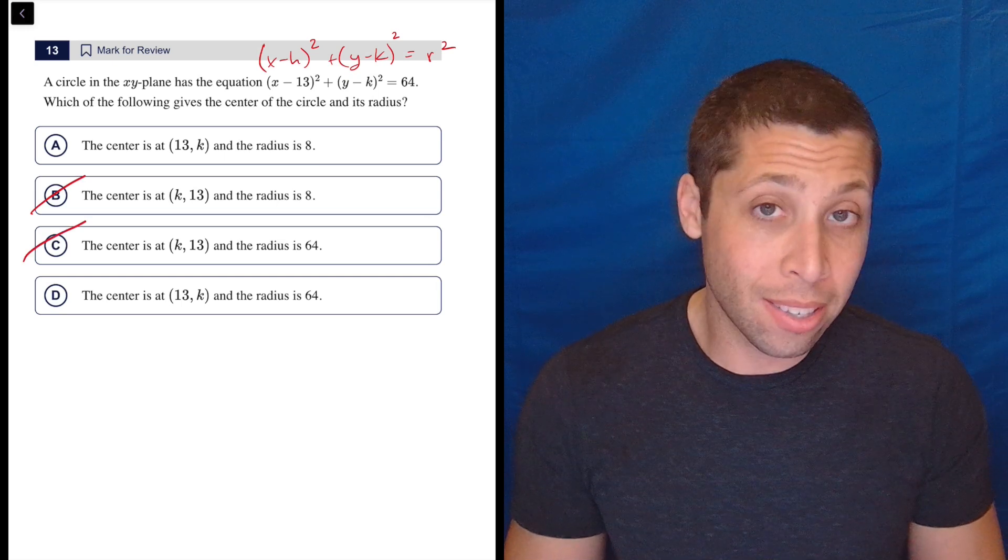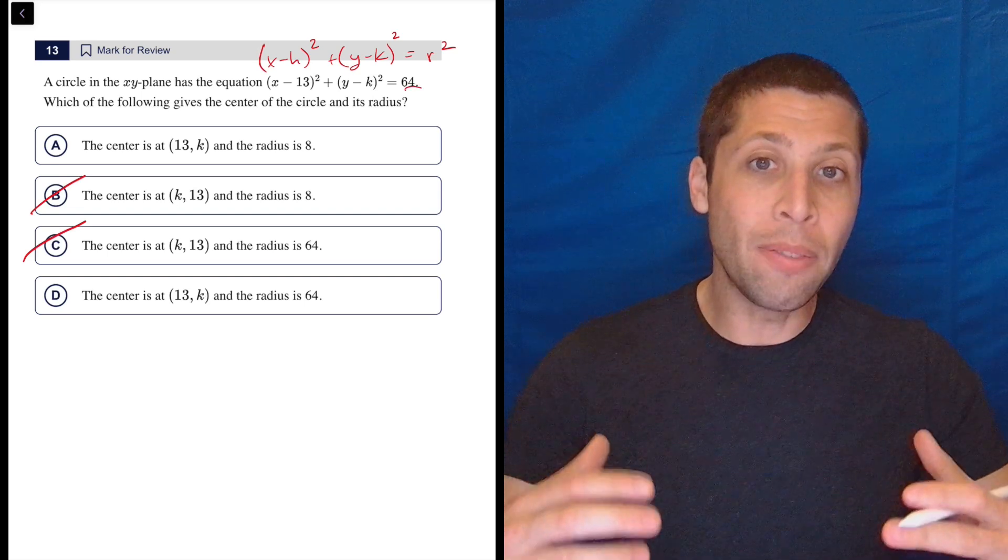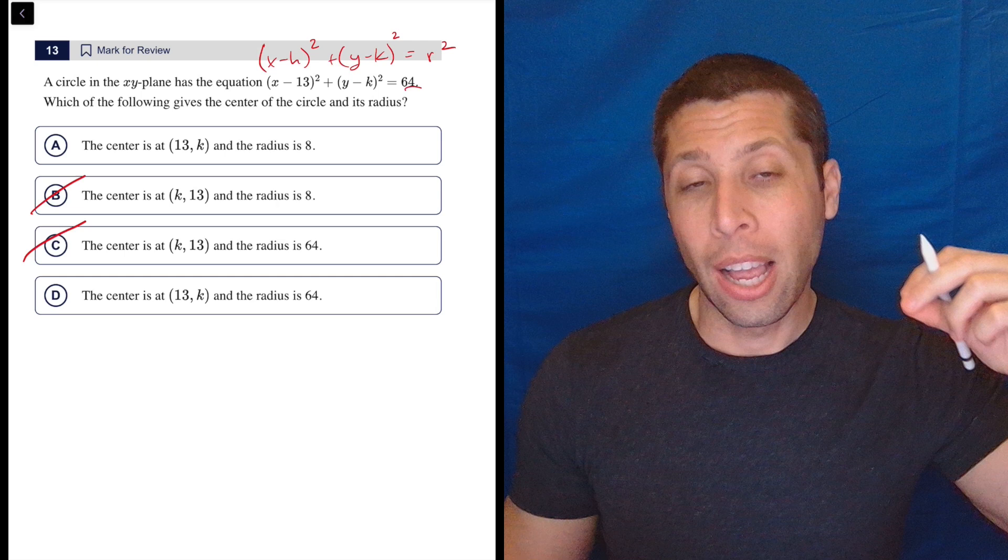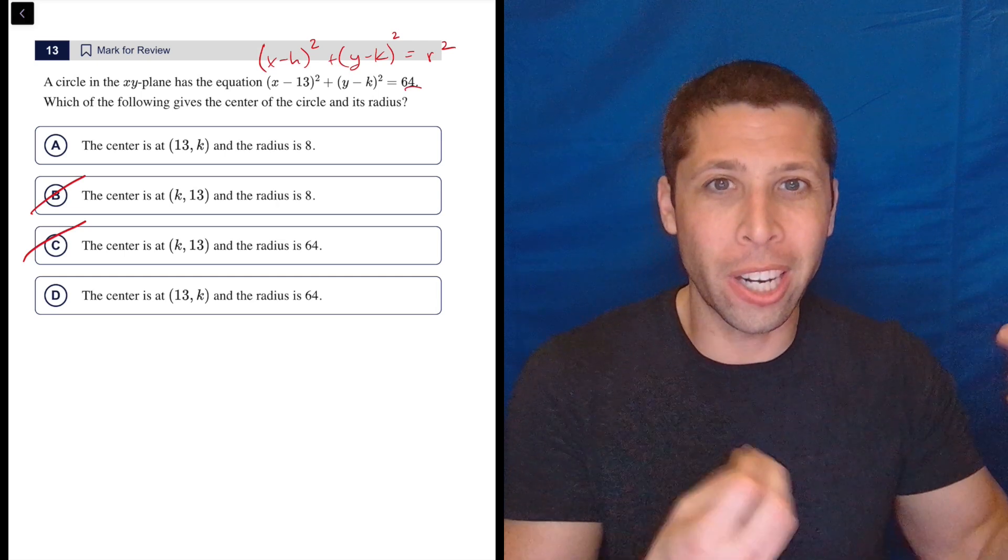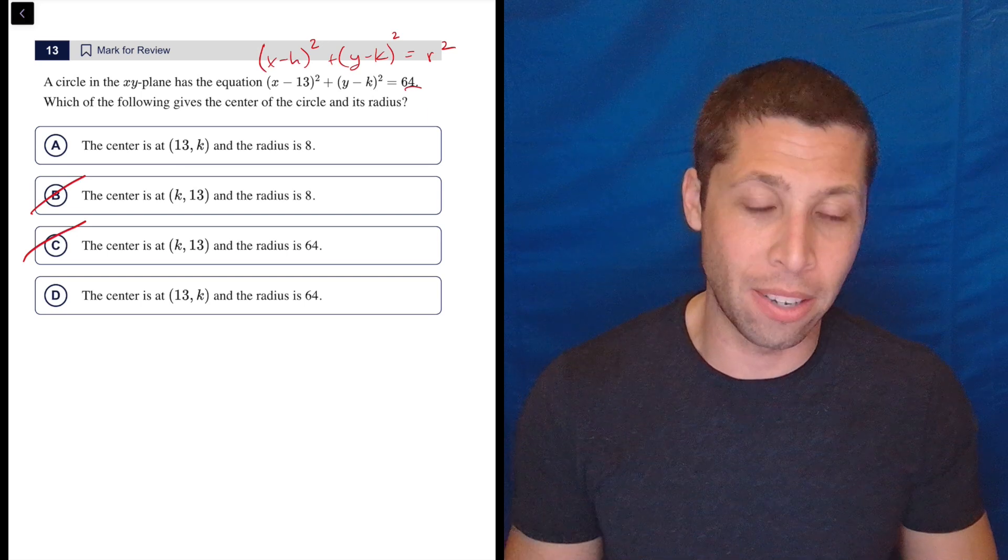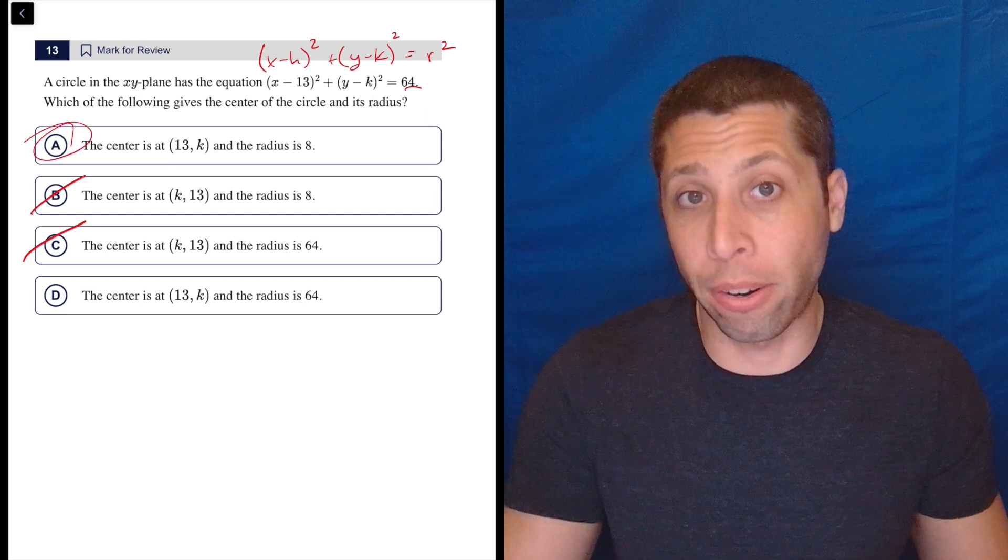And then the radius, this is the part most people are going to mess up if they're going to mess something up, is not 64 because even though the formula as we understand it has a squared on that radius, we don't see that squared because we're just going to square that number and it'll just look like a normal number. So we have to take the square root of that 64, which of course is 8. And so this is done in just a matter of seconds.